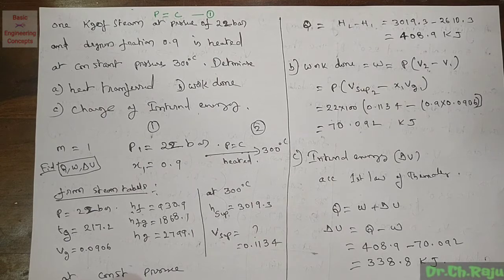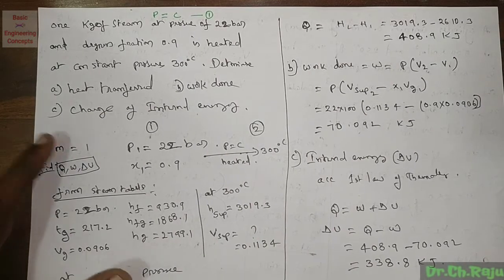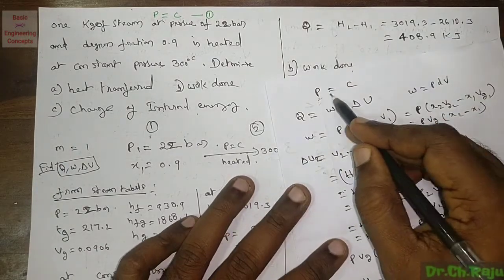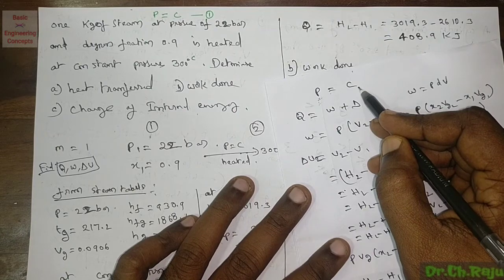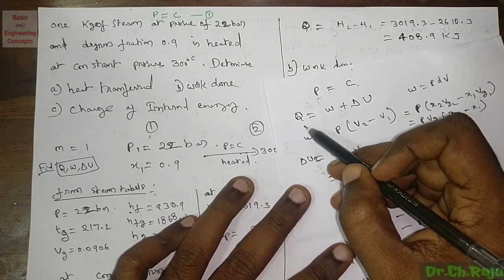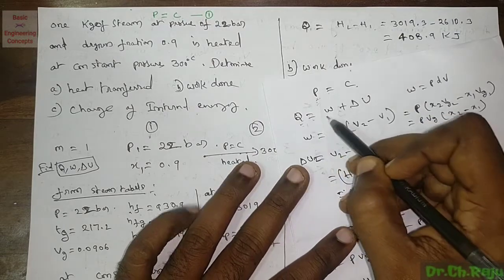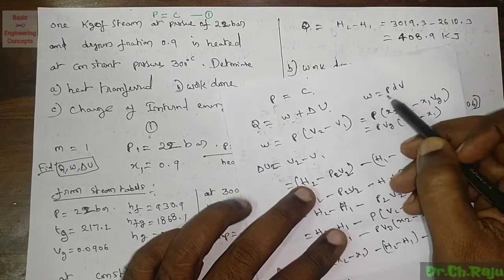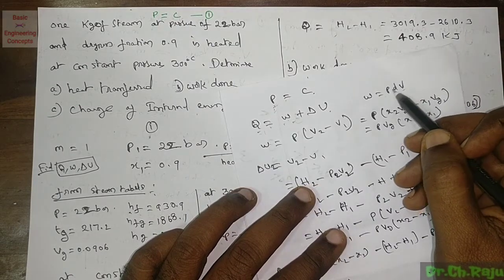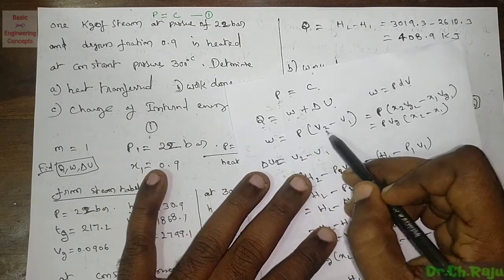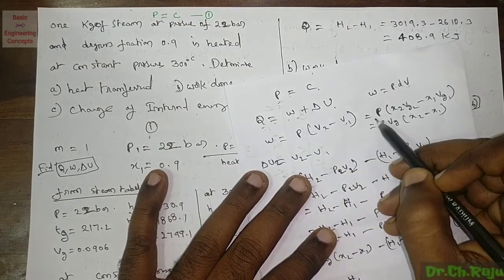Before going to the actual problem, I want to explain the constant pressure process and its formulas. In a constant pressure process, pressure is equal to constant. When we apply the first law of thermodynamics, Q is equal to W plus ΔU, where W is equal to p·dV, and since pressure is constant, W can be rewritten as p(V₂ - V₁).